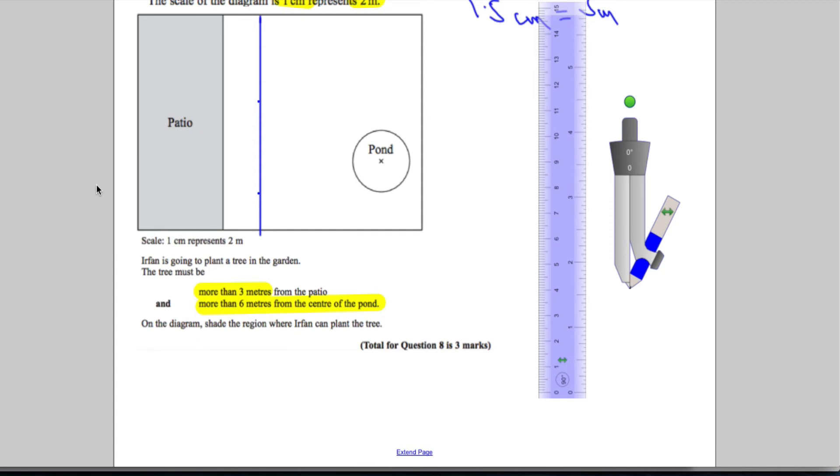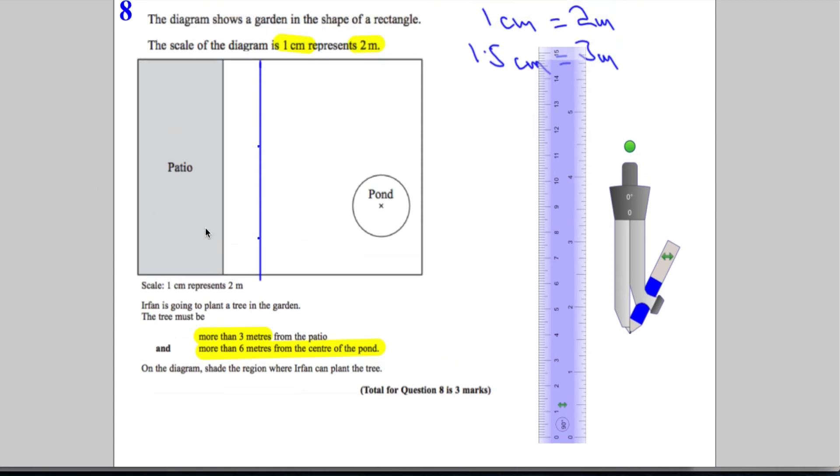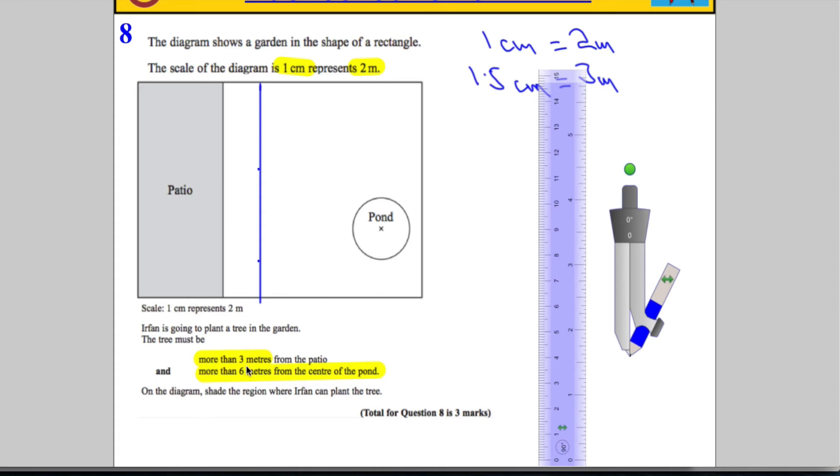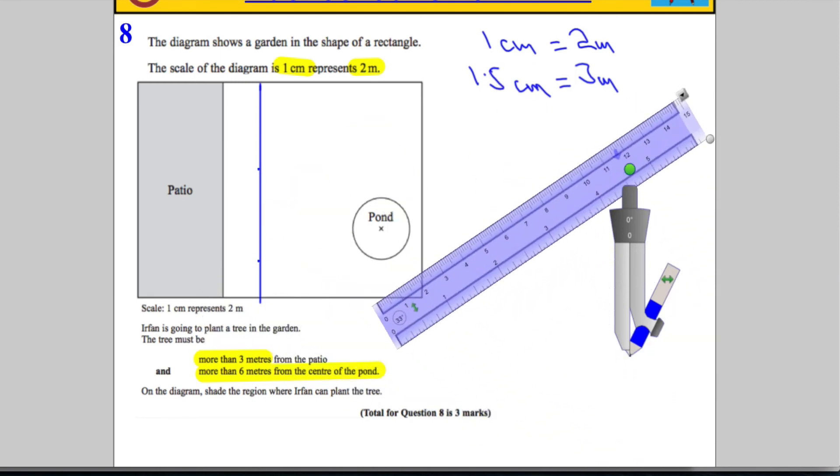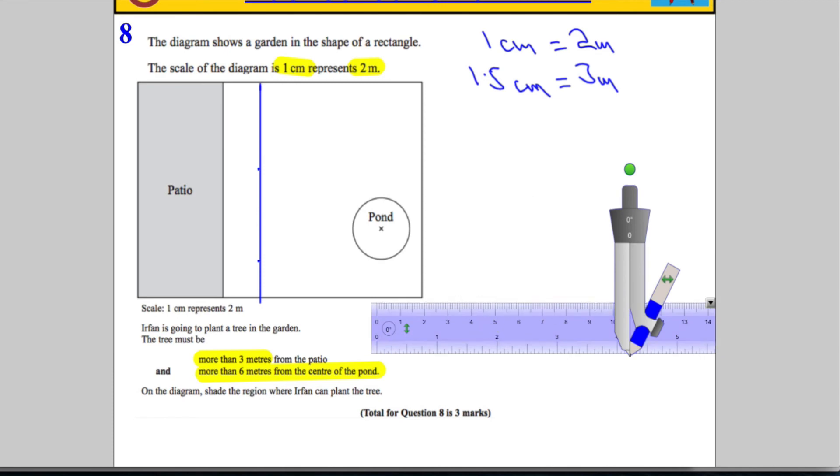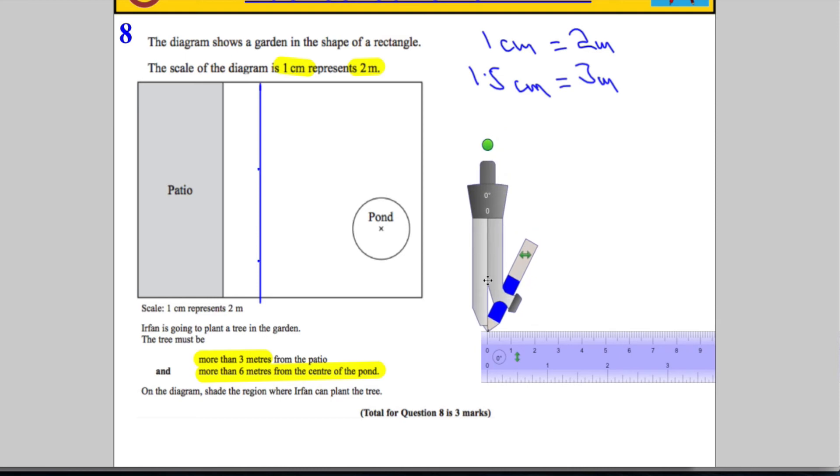Second piece of information - the tree must be more than 6 meters from the center of the pond. So more than 6 meters. That's going to have to be 3 centimeters. I'm going to turn my ruler around again. Here we've got to use a combination of the ruler and the compass. I need to measure out - 6 meters is going to be the same as 3 centimeters in this problem.